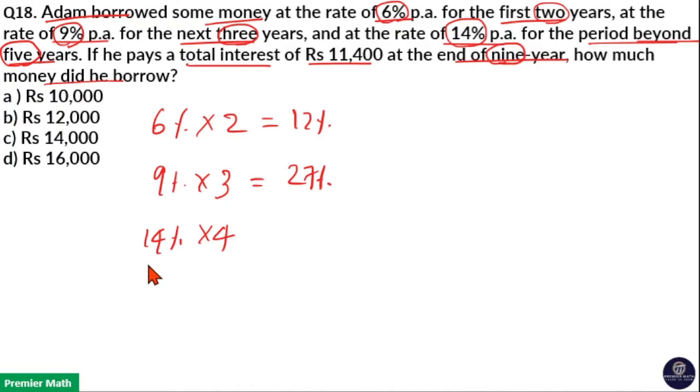So total interest he paid is 14 into 4, which is 56% for the next 4 years. So total number of years, 9 years, he paid total interest 12 plus 27 plus 56.